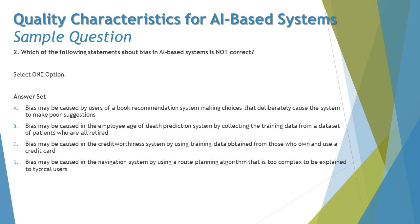Option A says: bias may be caused by users of a book recommendation system making choices that deliberately cause the system to make a poor suggestion. Bias is the deviation from the expected outcome. Bias can be caused by users deliberately poisoning the self-learning of an AI-based system. This is absolutely correct — making poor suggestions is a deviation from an expected result. So option A is a correct statement about bias.